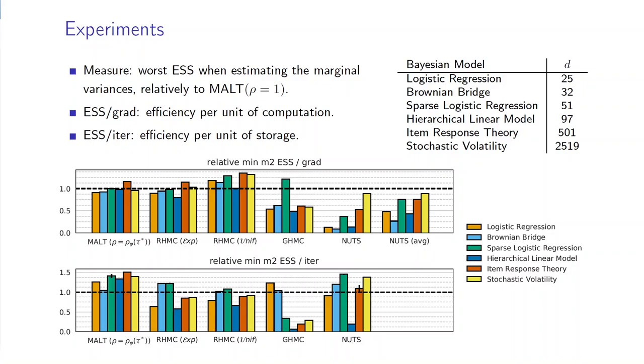We compare them with two different measures of efficiency: the first one being the ESS per gradient evaluation, which is an efficiency per unit of computation, and the second one being the ESS per iteration, which measures the efficiency per unit of storage. We can see that both MALT and randomized HMC perform much better than generalized HMC and NUTS on these two metrics.